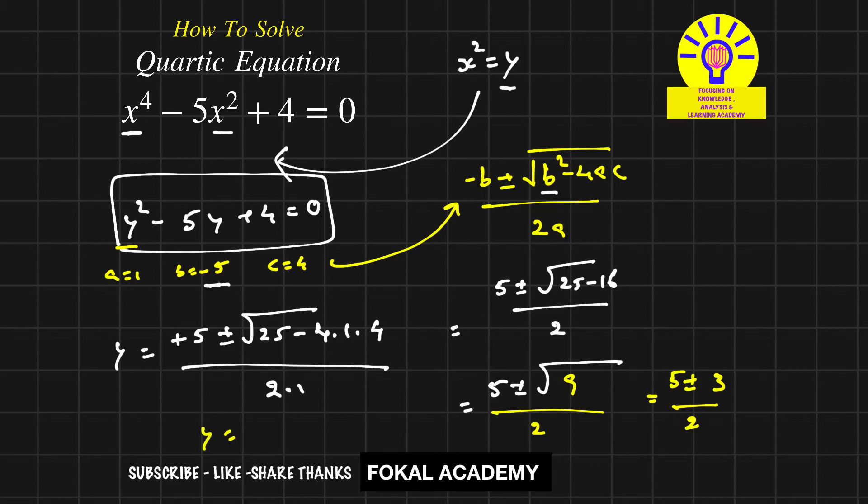Using plus, we get 8/2 = 4. Using minus, we get 2/2 = 1. So y = 4 or y = 1.